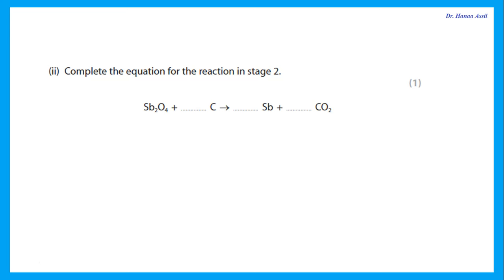Complete the equation for stage 2: balancing Sb₂O₃ + C → Sb + CO₂. Before the arrow: two antimony atoms, so two after the arrow. Four oxygens before, so need two CO₂ (giving four oxygens after). That means two carbons, so put 2 in front of C. The balanced equation is: Sb₂O₃ + 2C → 2Sb + 2CO₂.